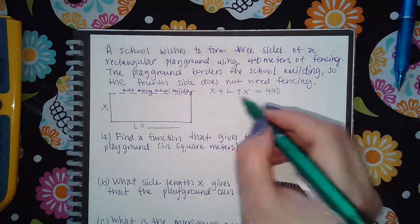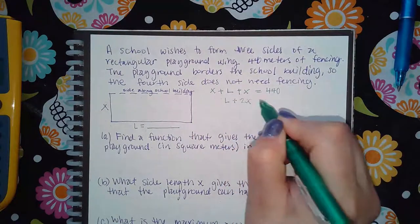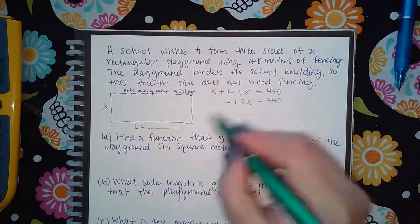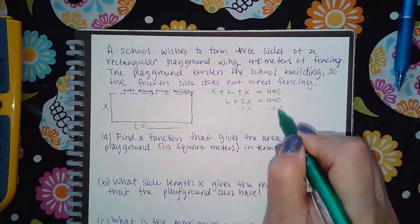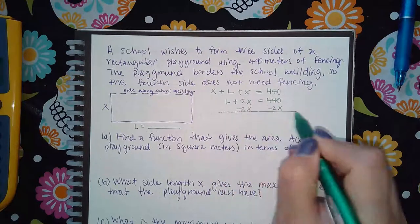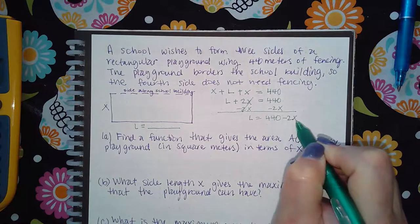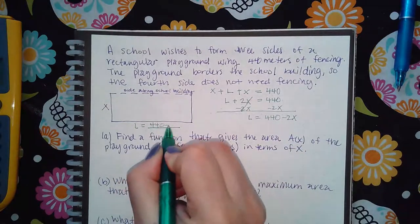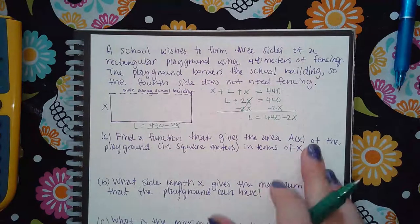Combining like terms gives L + 2x = 440. Solving for L: L = 440 − 2x. Now I have an expression to substitute for L.